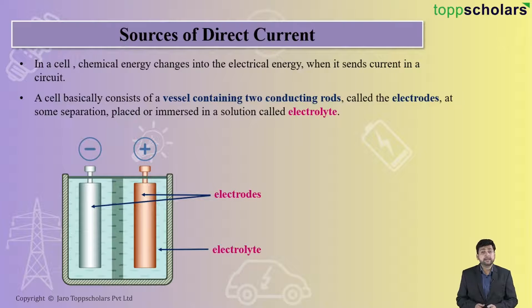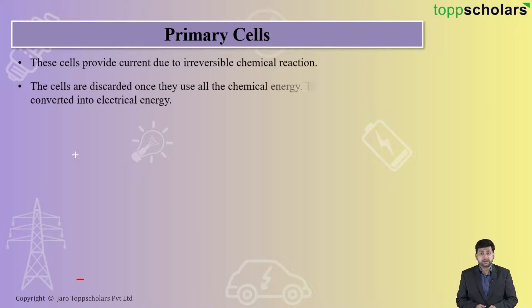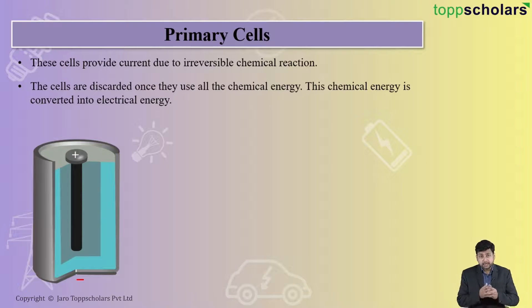Now let's talk about the primary cell. Now what do you understand by a primary cell? The primary cells are the cells which have an irreversible chemical reaction. For example, when you consider a battery, these cells can be used only once. And when they are used properly, that is the chemical energy is converted into electrical energy, they cannot be recycled. Such cells are dry cells.